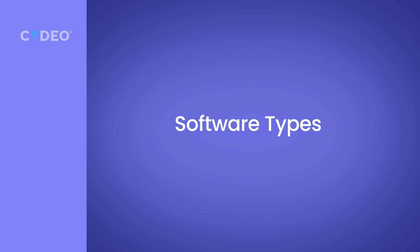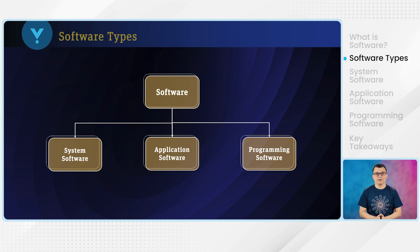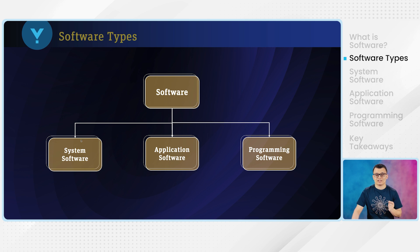You should also be familiar with the types of software. Software is divided into three main categories: system software, application software, and programming software. Let's take a look at each of these types.